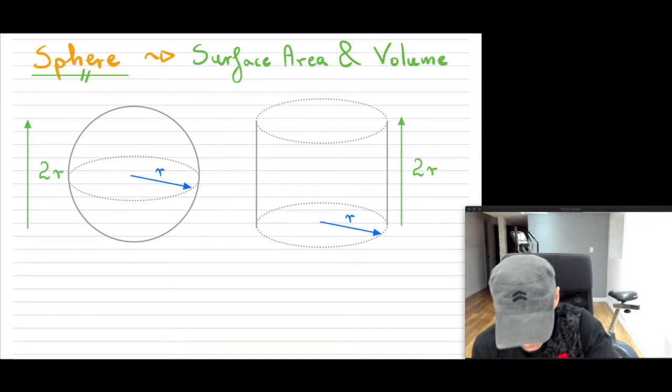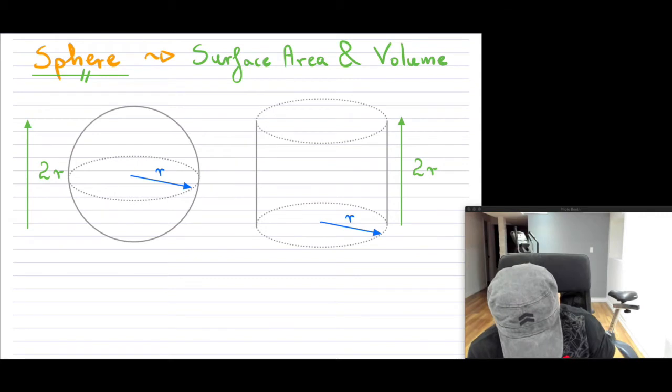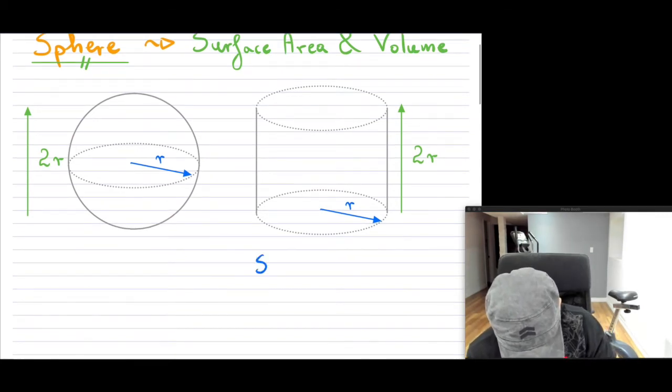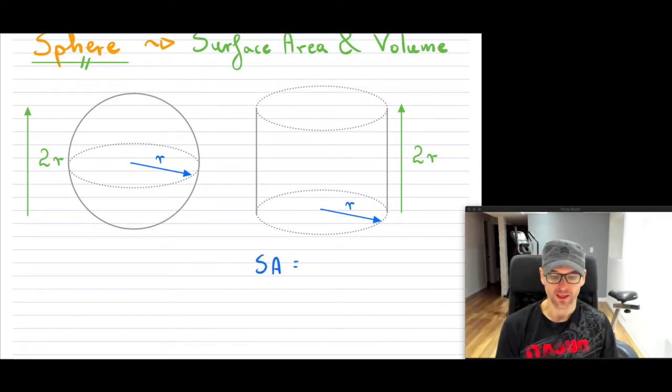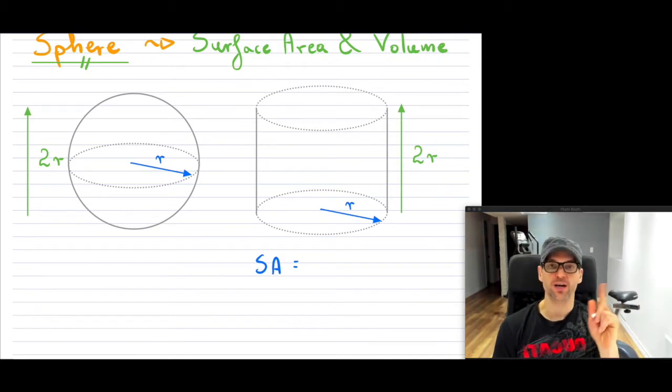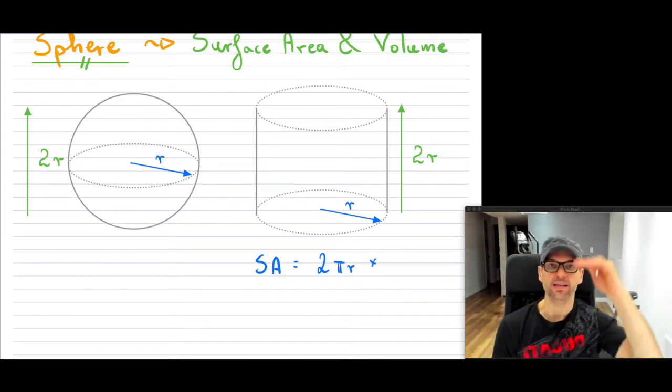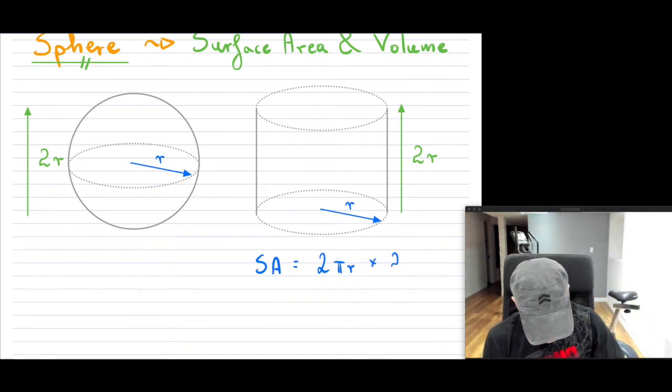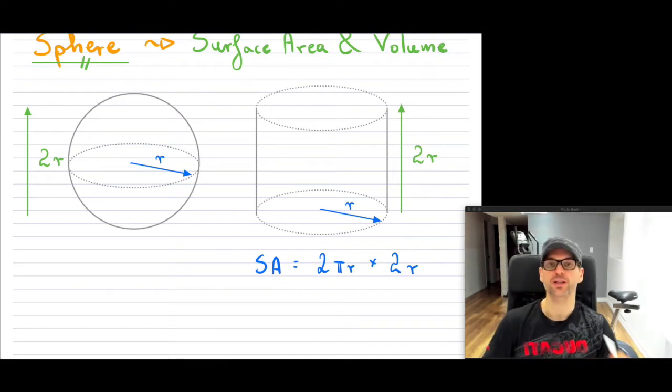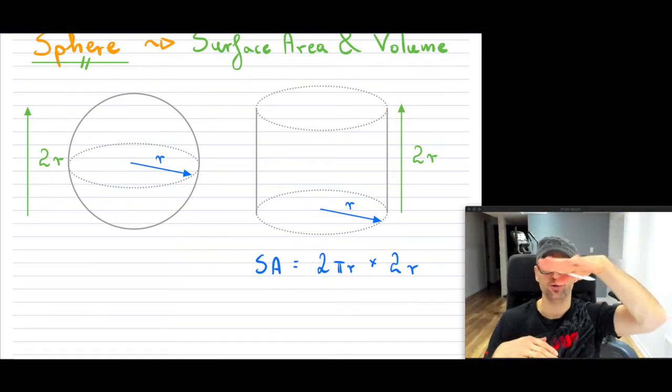So here, I'm going to just write that the surface area is equal to the circumference, which is in this case 2πr, multiplied by the height, which is 2r. And again, this is only of the lateral part. It does not include the top and the bottom.